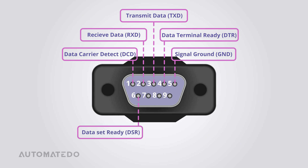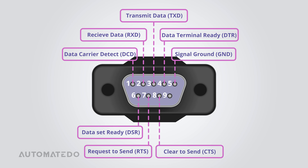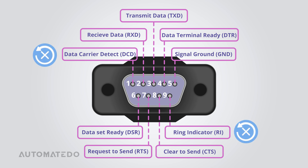Pin 6, the Data Set Ready or DSR, indicates the readiness of the receiver to communicate. Pin 7, the Request to Send or RTS, is a signal from the transmitter indicating intent to send data. Pin 8, the Clear to Send or CTS, is a signal from the receiver indicating readiness to receive data. Pin 9, the Ring Indicator or RI, indicates an incoming call signal. Due to limited use in modern RS-232 setups, the functions of the DCD and RI pins are not discussed further in this tutorial.